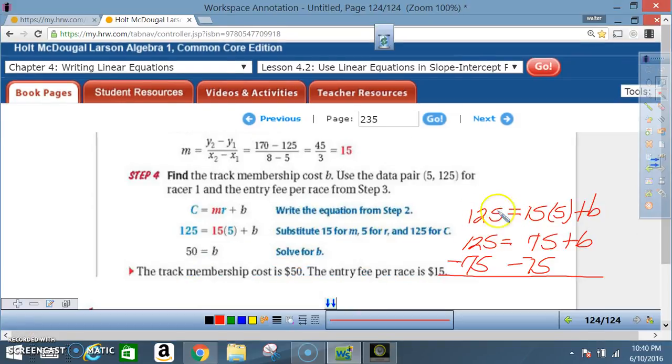And once again, for those who need to see this visually, 125 equals 15 times 5 plus B. That's that same equation right there. 15 times 5 is 75, so now you got 125 equals 75 plus B.